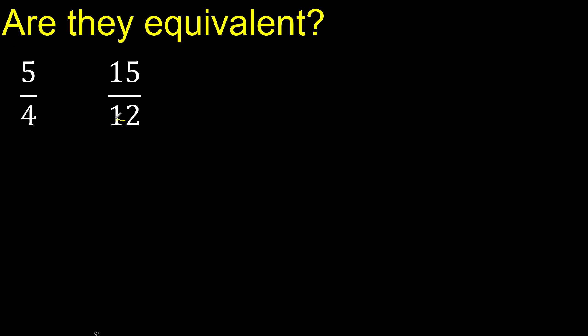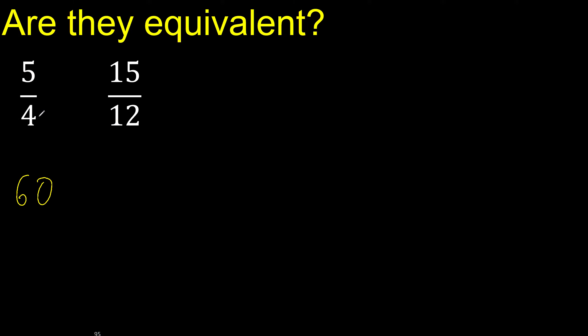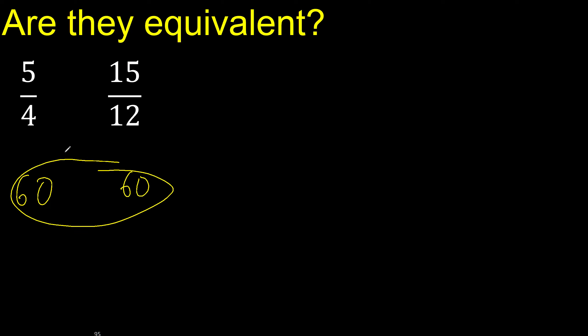First, multiply like this: 12 x 5 is 60, 4 x 15 is 60. Equal, therefore equal.